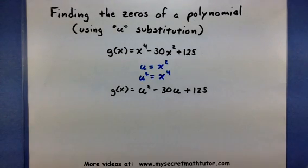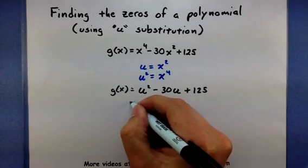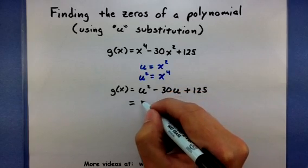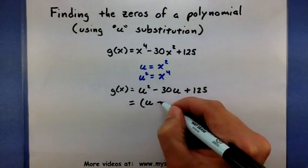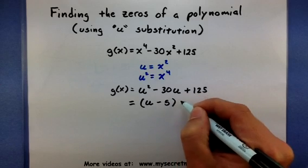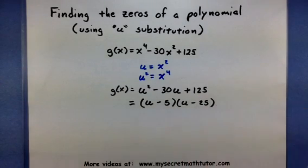Now to factor this, I can use the quadratic formula or other things since now it is actually a quadratic. I'm just going to go ahead and factor this as it is because I recognize that u minus 5 and u minus 25 is what it factors into.